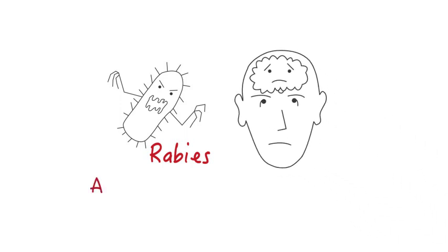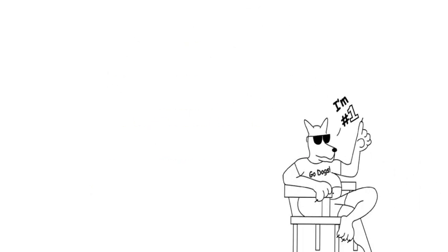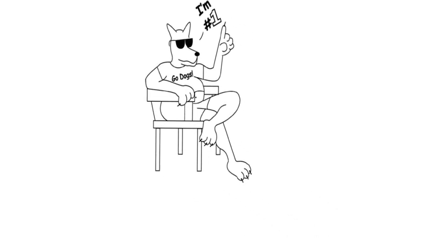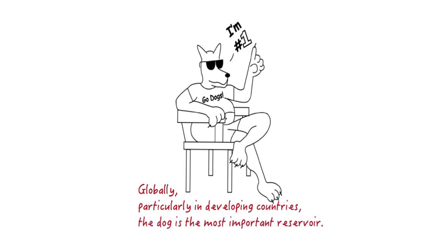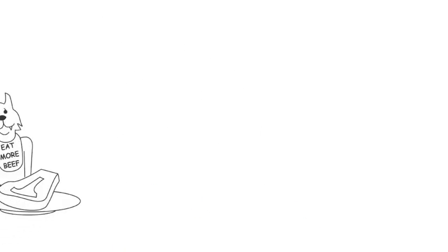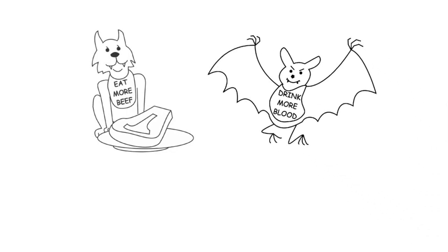Rabies is an acute progressive viral encephalitis that principally affects carnivores and bats, although any mammal can be affected. Around the world, the dog is the most significant reservoir of this virus, particularly in developing countries. Generally, the name of the mammalian species acting as a reservoir and vector is used to describe the type of rabies from an epidemiological standpoint.